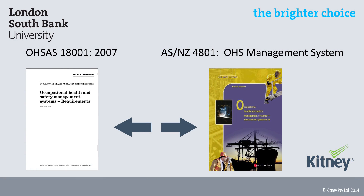The benefit of OHSAS 18001 is that it can be used in a number of different ways. It can simply be referred to when deciding on the contents of a management system, used as an internal benchmark to check controls are in place, or organisations can undergo external audit and gain accreditation against the standard. The standard also maps well against other national OHS management system standards, such as Australia and New Zealand's AS/NZS 4801 Occupational Health and Safety Management Systems.